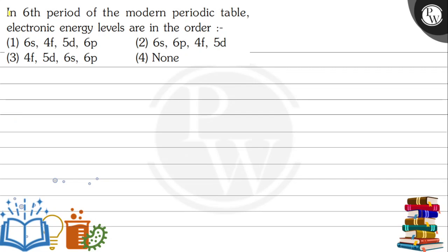The question says: in the sixth period of the modern periodic table, electronic energy levels are in the order. Option A is 6s 4f 5d 6p, option B is 6s 6p 4f 5d, option C is 4f 5d 6p, and the last option is none of these.